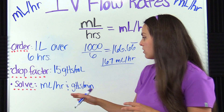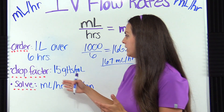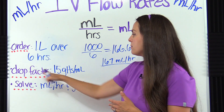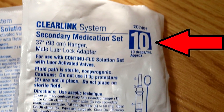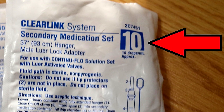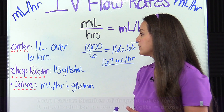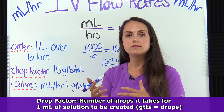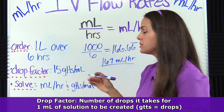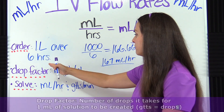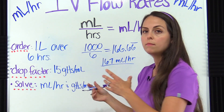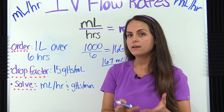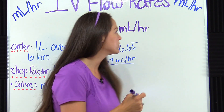Now let's solve for drops per minute. To do that, we need to be familiar with our drop factor. The drop factor comes from the IV tubing package — it tells you what the drop factor is for that particular tubing. A drop factor is the number of drops it takes to create one milliliter of solution. With this particular tubing, it says that for every 15 drops it makes one milliliter of solution. To solve for drops per minute, there's another formula to memorize.